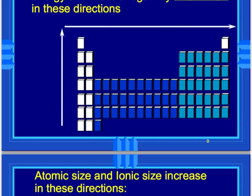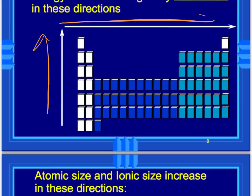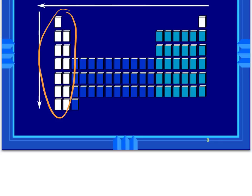Ionization energy and electronegativity sound similar, but remember: ionization energy is the energy required to remove an electron from an atom, while electronegativity is the atom's ability to pull an electron closer to its nucleus. Both have similar trends — they increase going up a group and increase moving across a period. Atomic radius and ion size also follow similar trends — atoms and ions are larger on the left side of the table and larger going down a group. Please see your teacher or textbook if you have any questions — there are also plenty of other great videos out there.